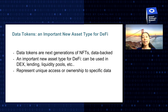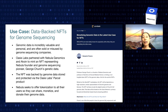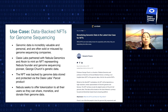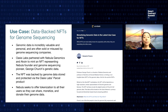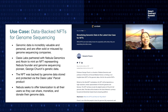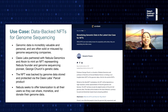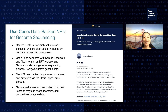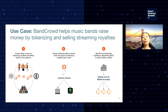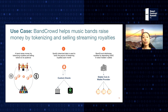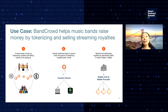Utilizing the Parcel platform developed by Oasis Labs, we have enabled new use cases. For example, data-backed NFTs for genome sequencing. Josh Church has minted his NFT for his genetic data — Josh Church is considered the founding father of modern genomics. And that's just one example. Data tokens can enable many different types of use cases. Here's an example where using data tokens, one can help a music band raise money by tokenizing and selling streaming royalty.